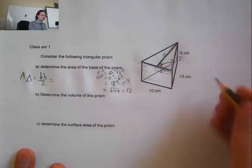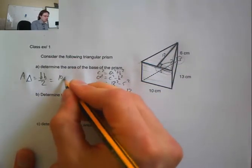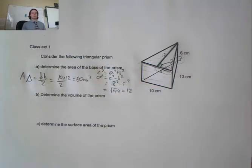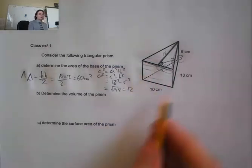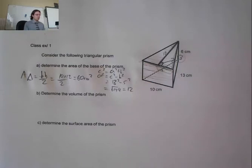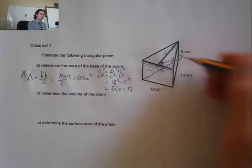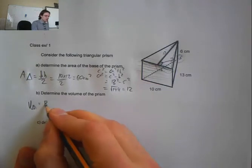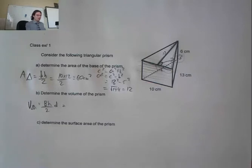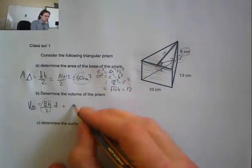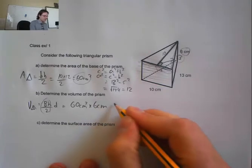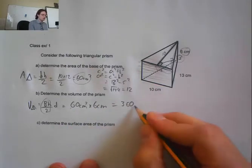Now I know the height is 12, so I can find the area. Area = base × height ÷ 2 = 10 × 12 ÷ 2 = 60 cm². Now for the volume: volume of a triangular prism equals base × height ÷ 2 multiplied by the depth. The area of the triangle is 60 and the depth is 6 centimeters, so 60 × 6 = 360 cm³.